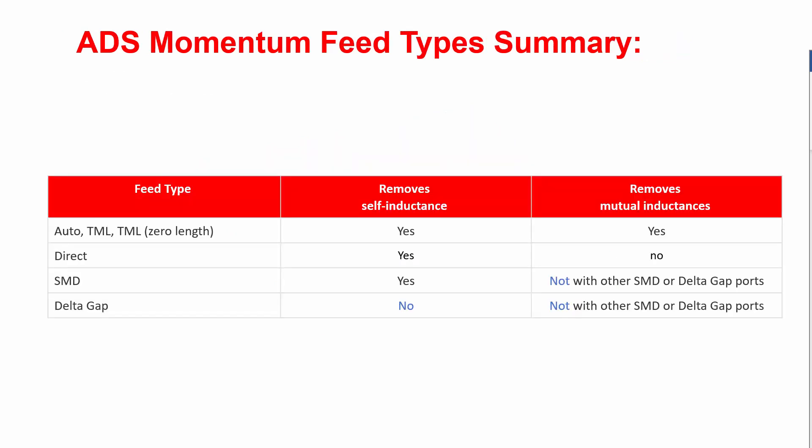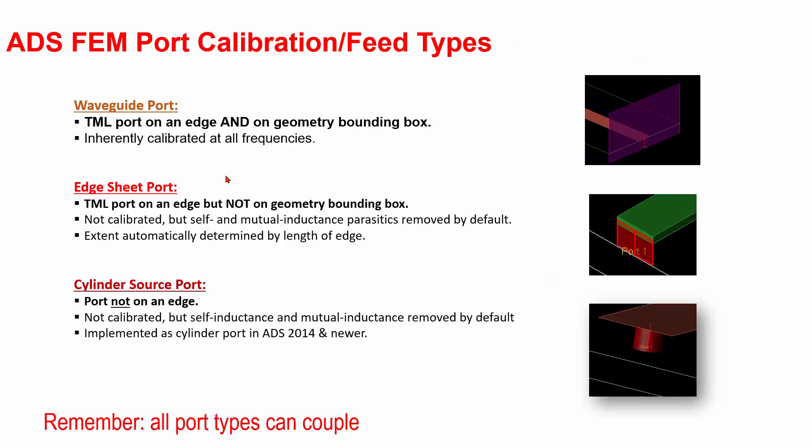We have discussed how direct a port is defined and how the TML is calibrated. This is a table to summarize the momentum feed types. It is important to consider these assumptions and conditions, then choose an appropriate calibration technology for your design. Thanks for watching.